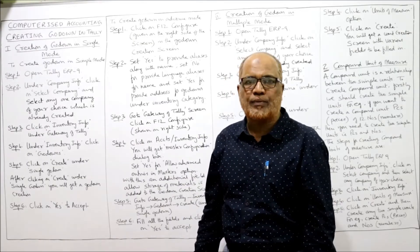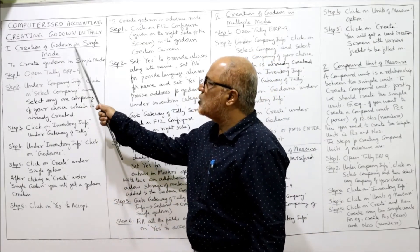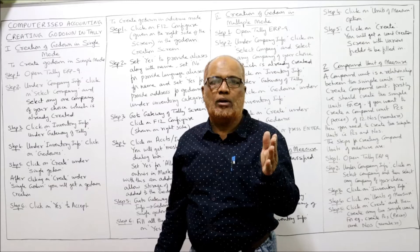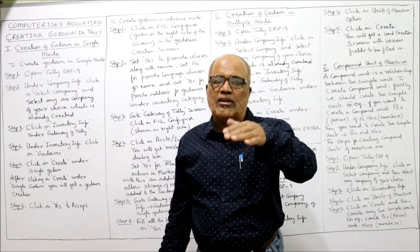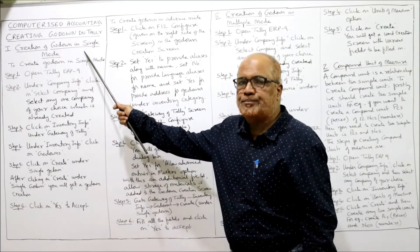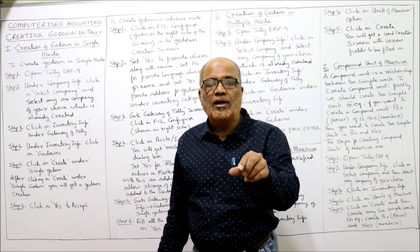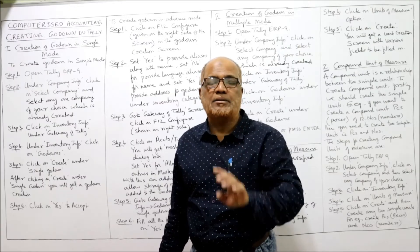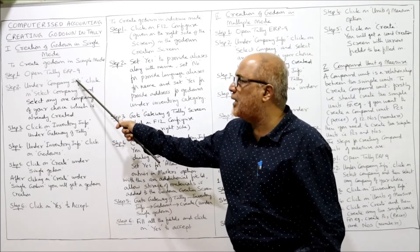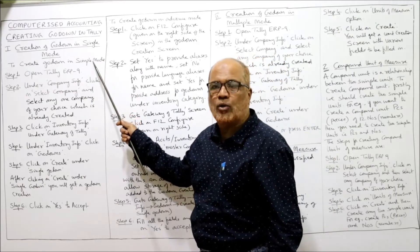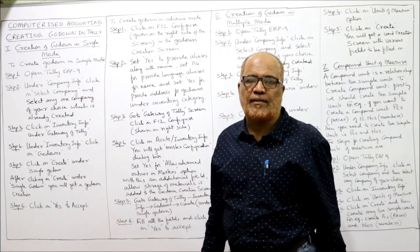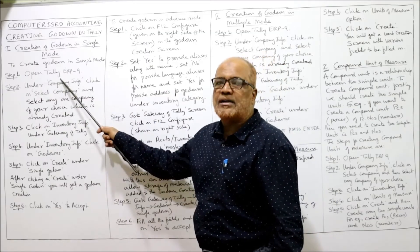Now, what are the steps for creation of a godown? There are two modes: single mode and multiple mode. Under single mode, there are two further options: simple mode and advanced mode. I am going to explain each of these.